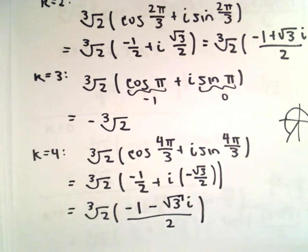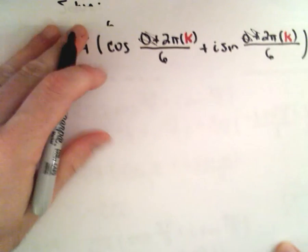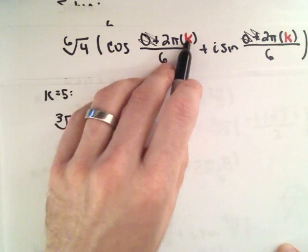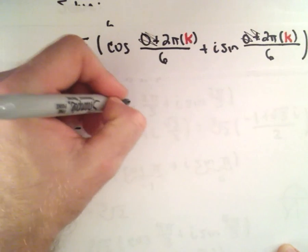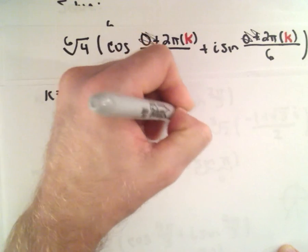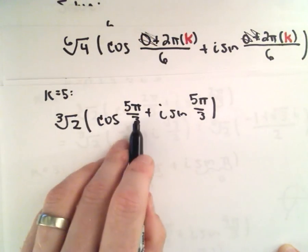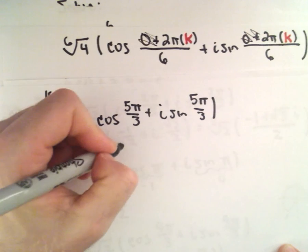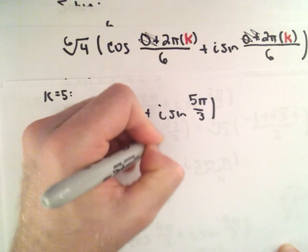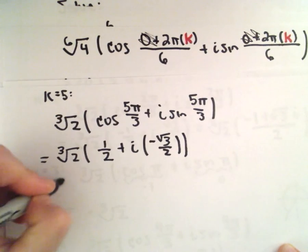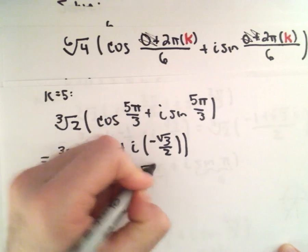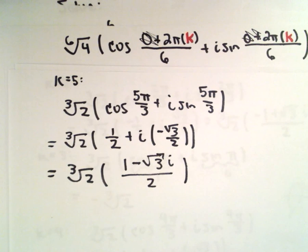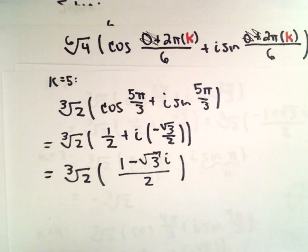Last but not least, for k equals 5, we have the cube root of 2 times cosine of 10 pi over 6, which reduces to 5 pi over 3, plus i times sine of 5 pi over 3. The angle 5 pi over 3 is in the fourth quadrant. Cosine of 5 pi over 3 is positive 1/2 and sine of 5 pi over 3 is negative root 3 over 2. So we can rewrite this as the cube root of 2 times the quantity 1 minus the square root of 3 times i, all over 2. And now we've found all 6 solutions, with k ranging from 0 up to 5.